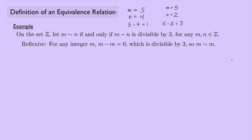Reflexive: for any integer M, M minus M is zero, and zero is divisible by three. So M is equivalent to M — reflexive works.